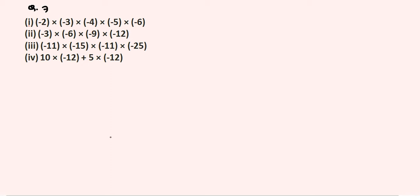Question number 7, exercise 1d — evaluate. You have to multiply the digits. In the first question, only multiplication is there and there are 5 negative numbers: 1, 2, 3, 4, 5. If we multiply 2 negative numbers, negative into negative gives positive. Again, the next 2 negatives give positive. But minus 6 has only one negative remaining, so our final answer will be negative.